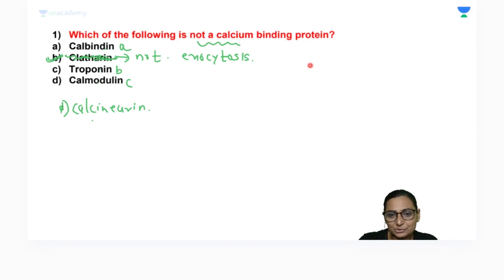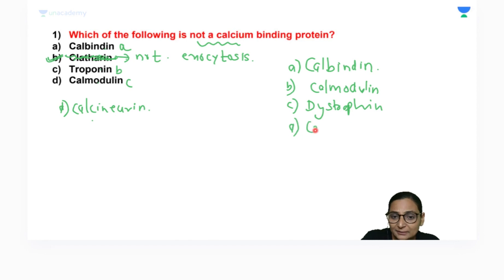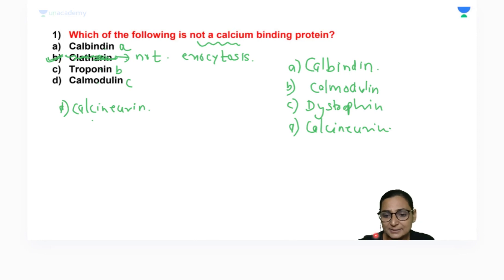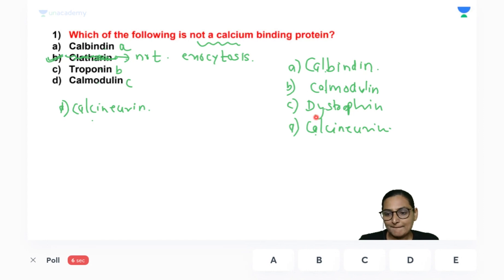Now another question: which is not a calcium binding protein — calbindin, calmodulin, dystrophin, or calcineurin? This is one of the very very important questions as far as calcium binding proteins are concerned. What will be your answer?